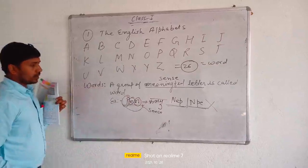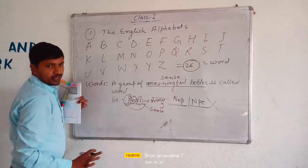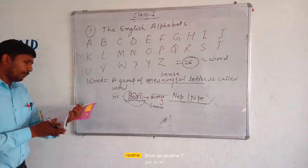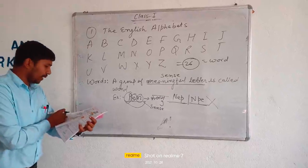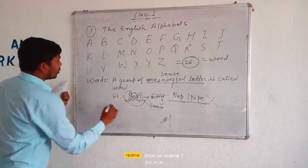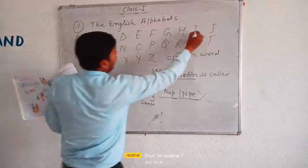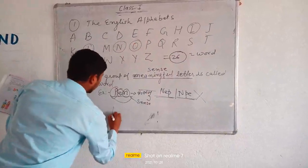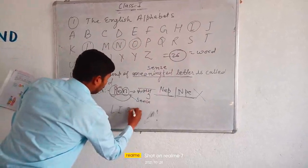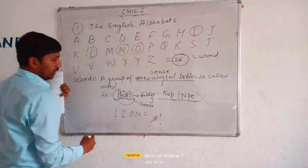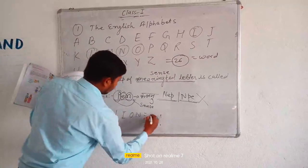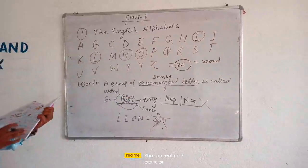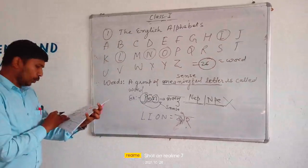Another example: L, I, O, N. What do you mean? Lion. Another word: L, I, N, E. What do you mean? Line. S, H, A, P, E. What do you mean? Shape.